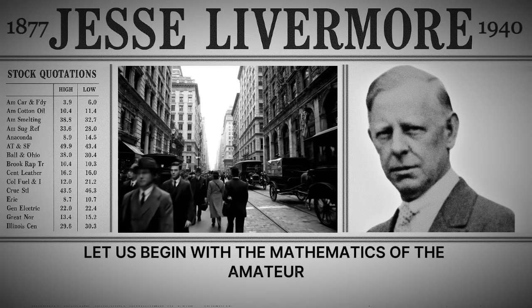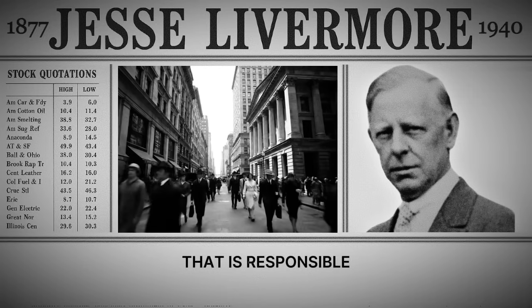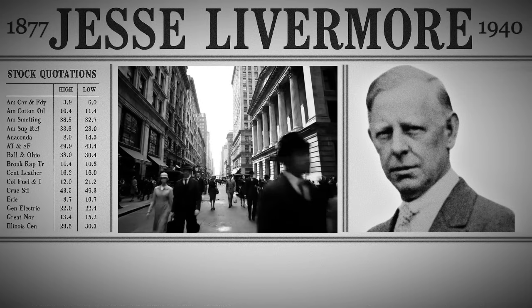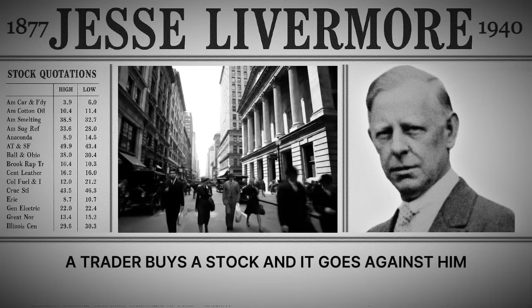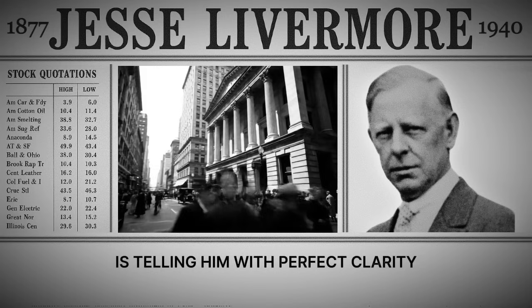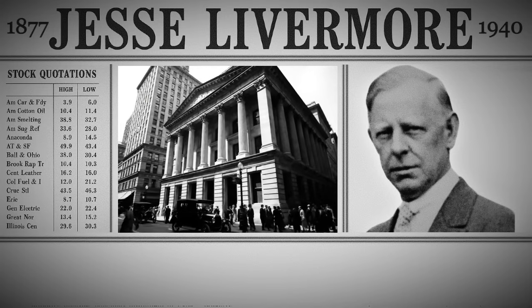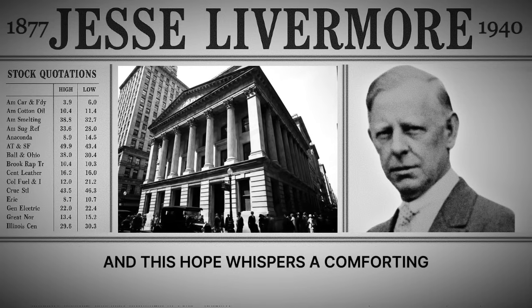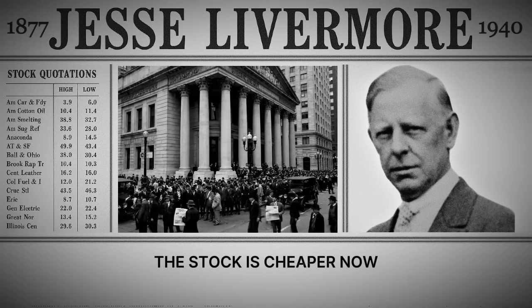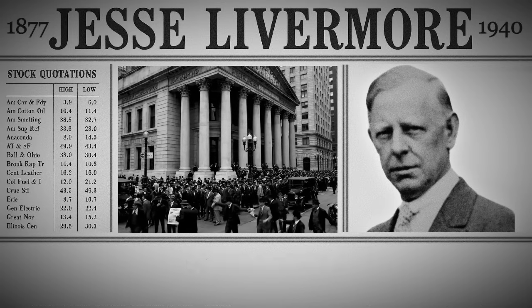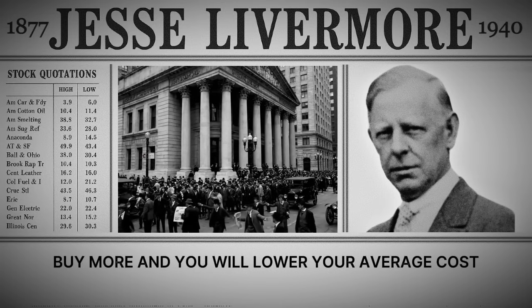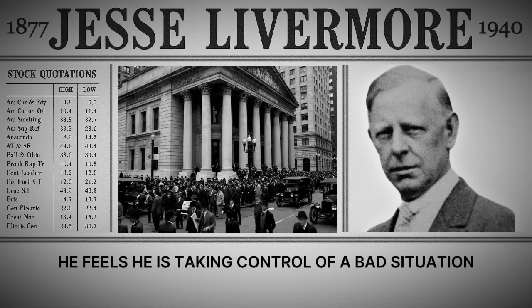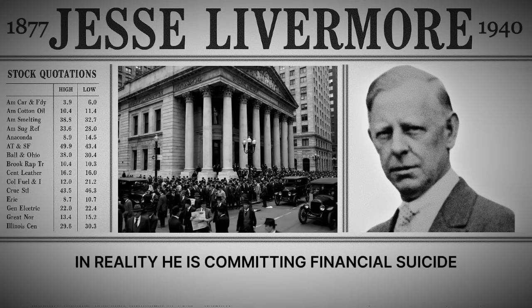Let us begin with the mathematics of the amateur: the great foundational error responsible for more financial ruin than any other. This is the practice of averaging down a losing position. A trader buys a stock and it goes against him. The market, the final and absolute judge, is telling him with perfect clarity that his timing was wrong. But the amateur's ego cannot accept this verdict. He is consumed by hope, and this hope whispers a comforting and fatally flawed piece of logic: the stock is cheaper now, it is a better bargain, buy more and you will lower your average cost. In reality, he is committing financial suicide.